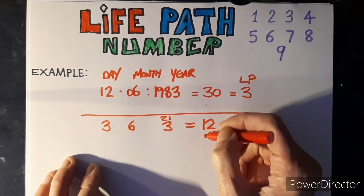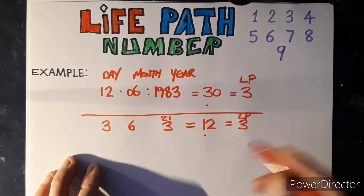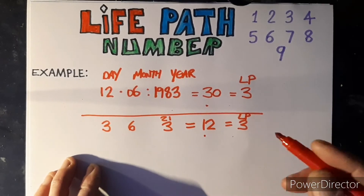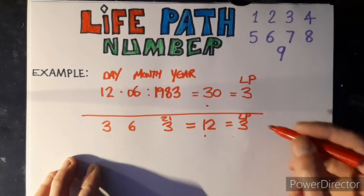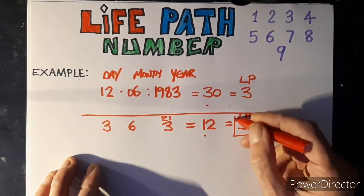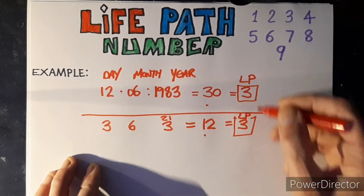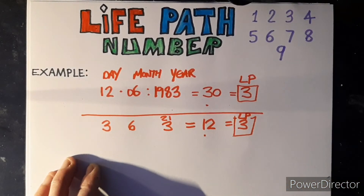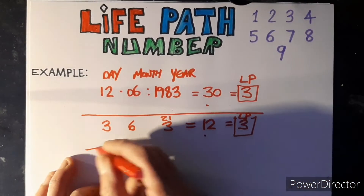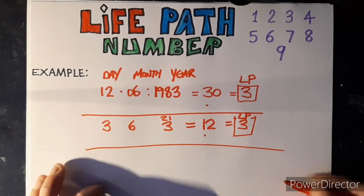The only difference between the methods is the higher intermediate number — not everybody uses the higher number. The most important thing is the life path number itself, and we've reached life path three either way. Let me give you another example.